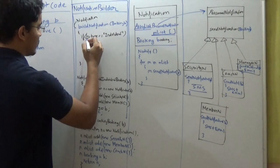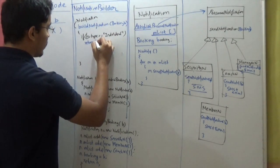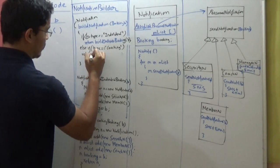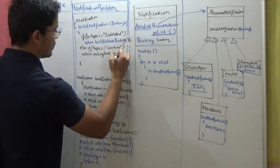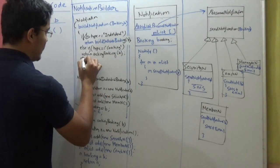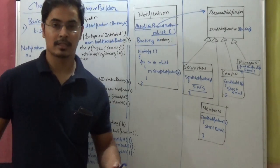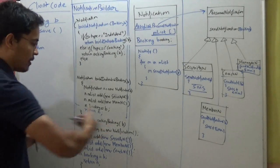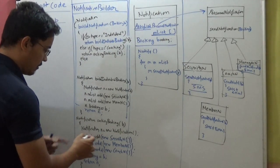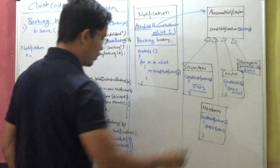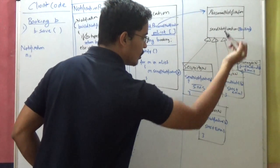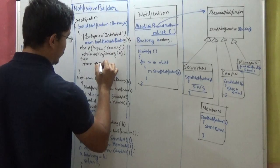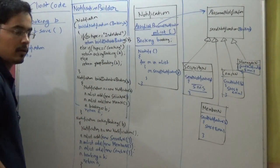So if booking type equals individual, we'll call return buildIndividualBooking and pass on the context. Else if b.type equals coaching, return the coaching booking notification. We also have to write one more method. Remember, for lifetime members doing group booking, we'll have to send to security, member, coach and manager. So it will be a very similar function — we'll write one more function which will return a Notification object. The mList will add one instance each of SecurityNotification, MemberNotification, CoachNotification, and ManagerNotification, build that object and return it. We'll call it return groupBooking(b), which will build the Notification object for group booking.